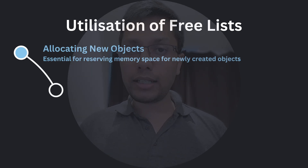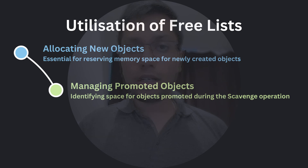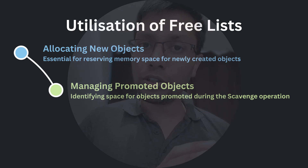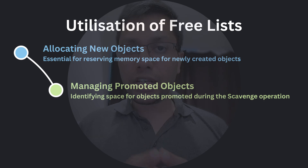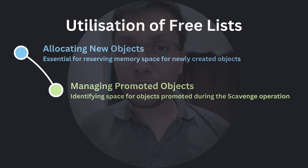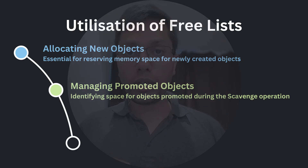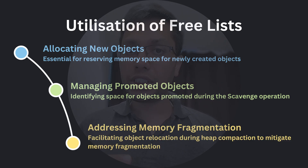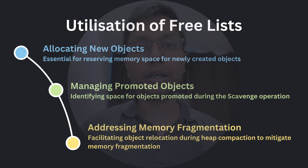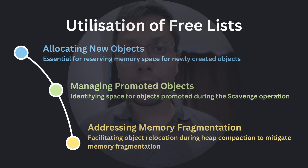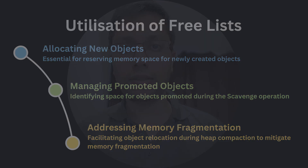Free lists are also used during the scavenge operation. During scavenge, objects that have survived are moved from the new space to the old space. The free lists in the old space are used to identify where there is enough space to accommodate these promoted objects. Also, during the process of heap compaction — which is done to mitigate memory fragmentation — objects might need to be moved or relocated. Again, free lists are used to find suitable new locations for these objects.